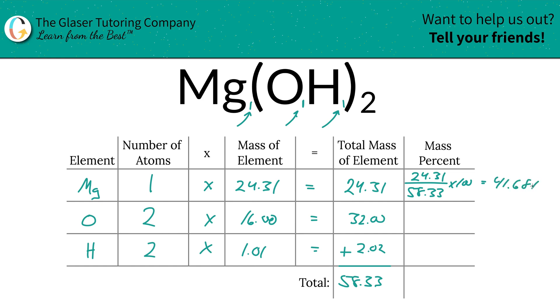Anytime you multiply a fractional value by 100, you convert it into a percent. So this is going to be 41.68, and that's the value for magnesium. Oxygen is going to be the same thing: take the total, 32 over 58.33, multiply that by 100, and you're going to find a percentage of roughly 54.86 percent.